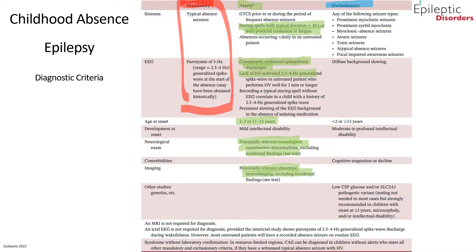The exclusionary column lists clinical and electrographic features that would go against a diagnosis of childhood absence epilepsy. These include primary myoclonic seizures, prominent eyelid myoclonia, atonic seizures, and focal impaired awareness, as well as EEG findings showing diffuse background slowing, moderate to profound intellectual disability, cognitive stagnation or decline, and low CSF glucose.